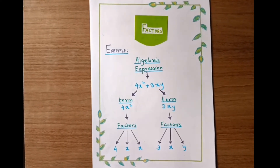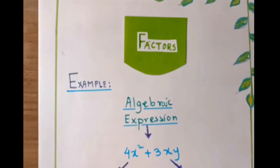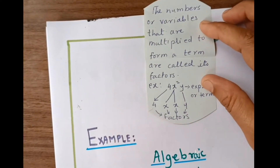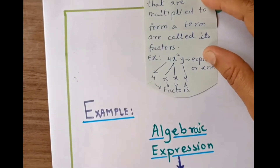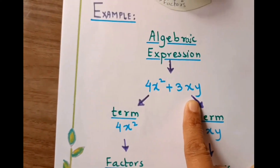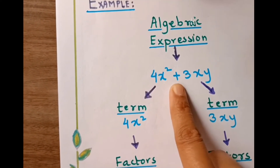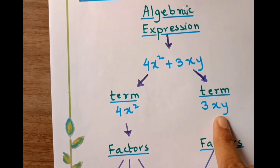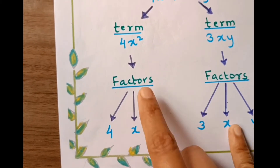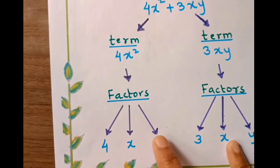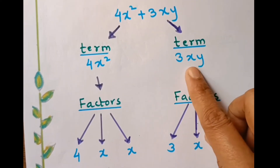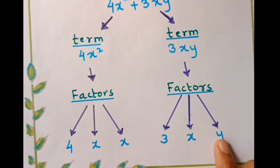Next one is factors — here is the meaning and an example. An algebraic expression which has two terms with an algebraic operation plus. Each term has some factors: x squared means x and x, they are factors. Also 3xy — each one is one factor, 3, x, and y are factors.